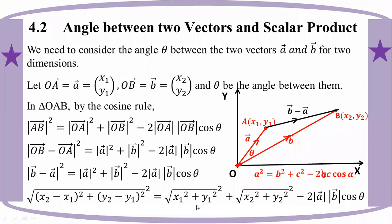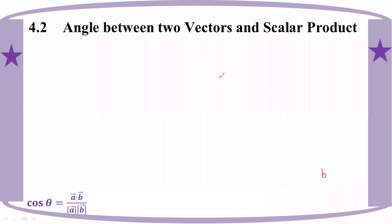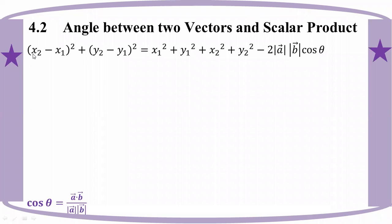Then we call the square root of x1 squared plus y1 squared, and the square root of x2 squared plus y2 squared. That tells us the plan — the modulus expressions are not equal.